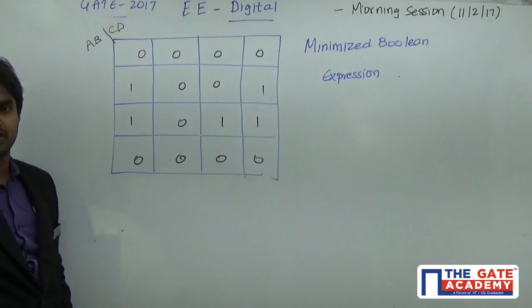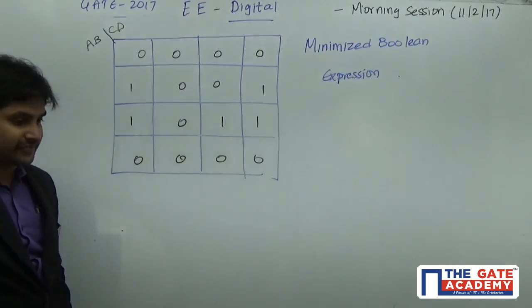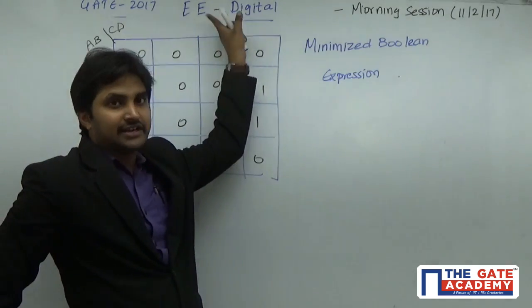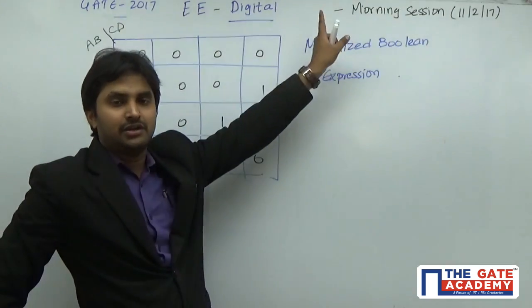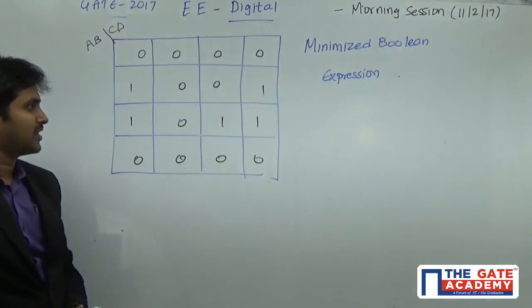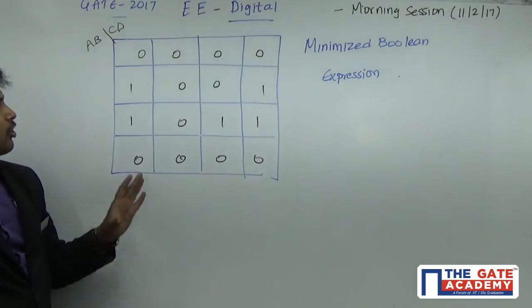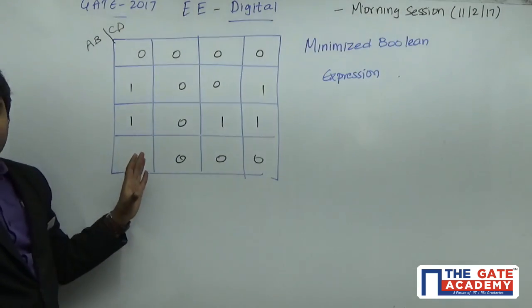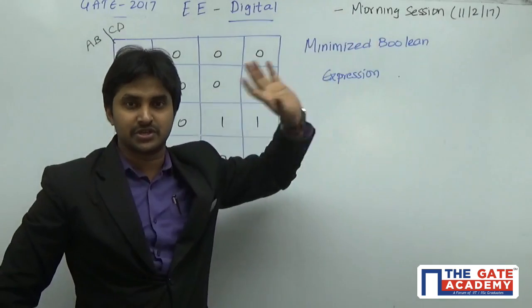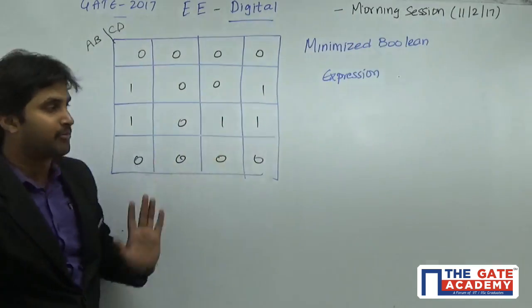Hello students. This particular question is from GATE 2017, asked in the electrical morning session, and the topic is going to be digital. A Karnaugh map has been given and we have to write the minimized Boolean expression. It's a very simple problem.